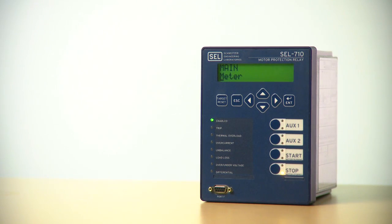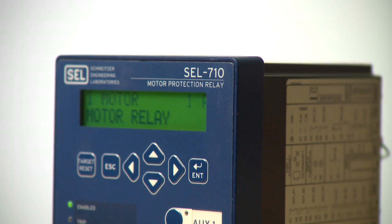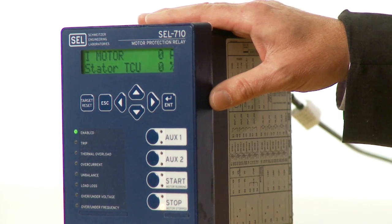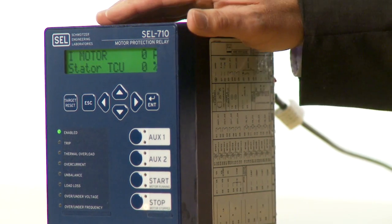I'm going to set the SEL-710 motor protection relay using the nameplate application. This application uses basic motor information. You enter that information into the relay and it calculates all the necessary settings to protect the motor. We're going to set the nameplate from the front panel so there's no need for a laptop computer or any software. The buttons and the display are all you need to get started.